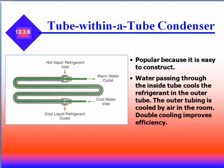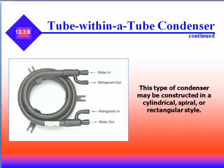In a tube-in-tube condenser, you'll notice the cool water inlet is on the same side as the cool liquid outlet — meaning the water and the refrigerant are moving in opposite directions. This type of condenser may be constructed in a cylindrical, spiral, or rectangular style.